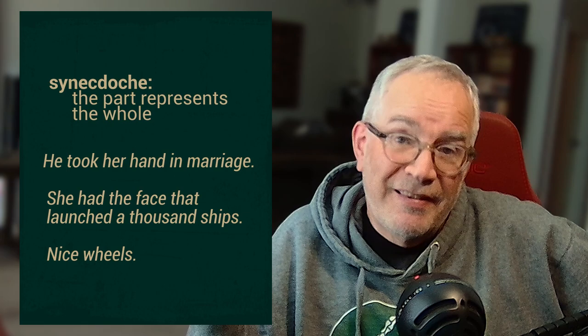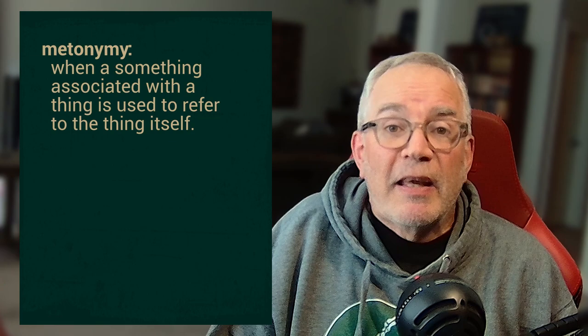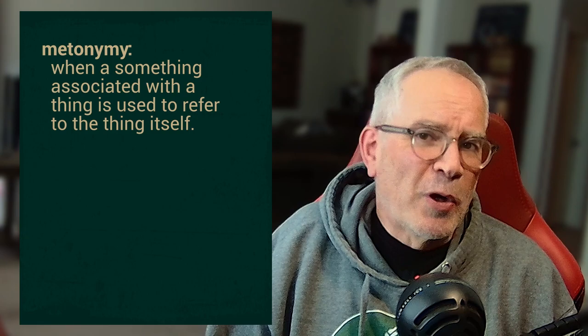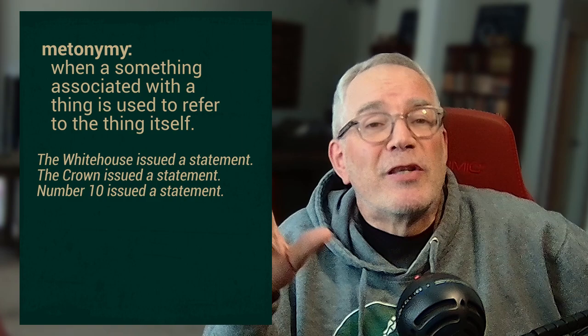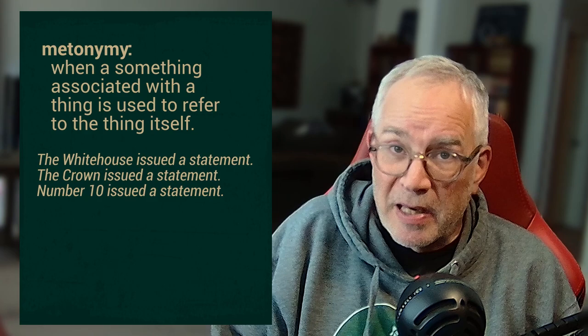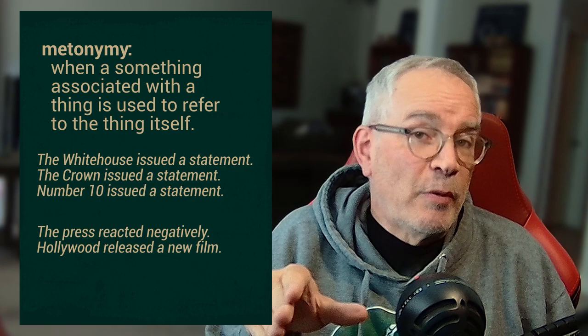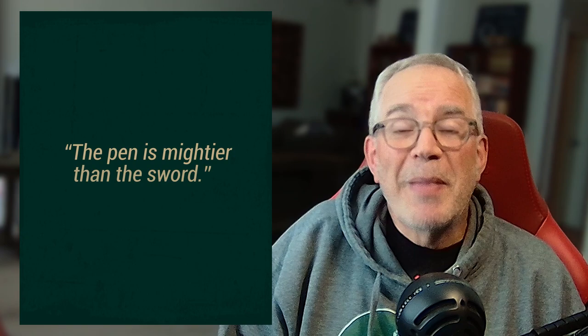Metonymy is a figure of speech in which a thing is replaced by another thing that is closely related to or associated with it. It sounds more complicated than what it is. 'The White House,' 'the Crown,' or 'Number 10 issued a statement today' — these are associated with the US President, the British Monarchy, and the British Prime Minister respectively. More examples: 'The press reacted negatively,' 'Hollywood released a new film.' Now try this one: 'The pen is mightier than the sword' — explain the metonymy in that one.